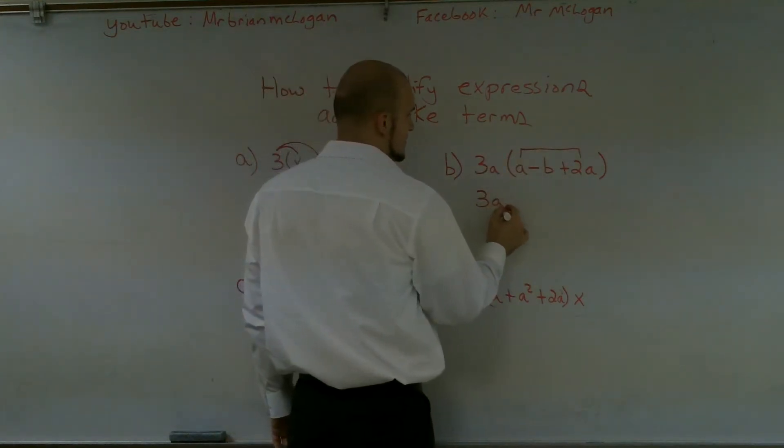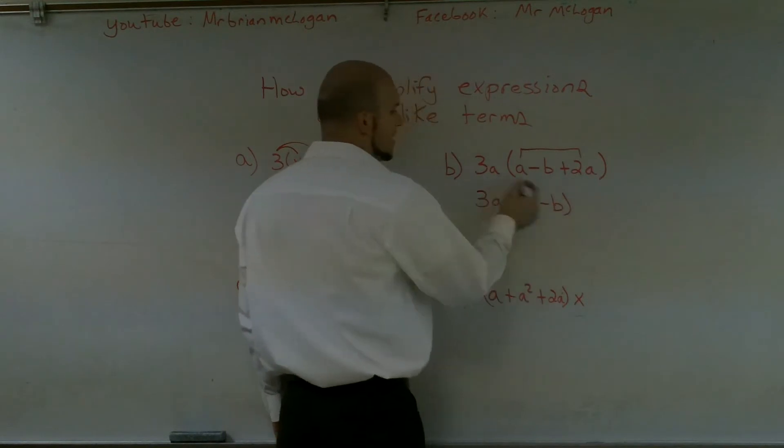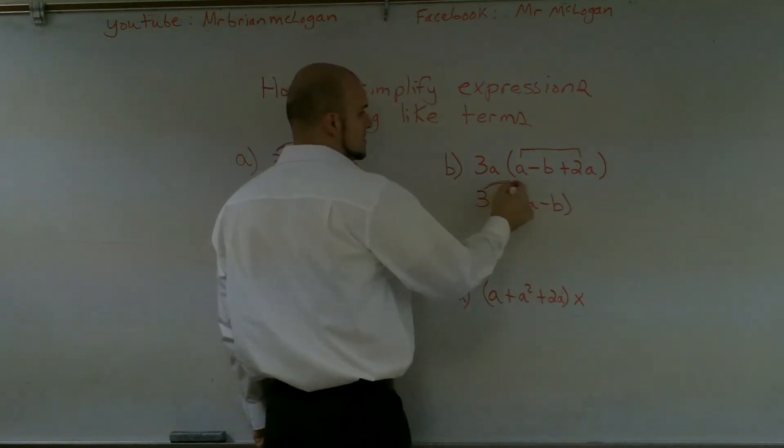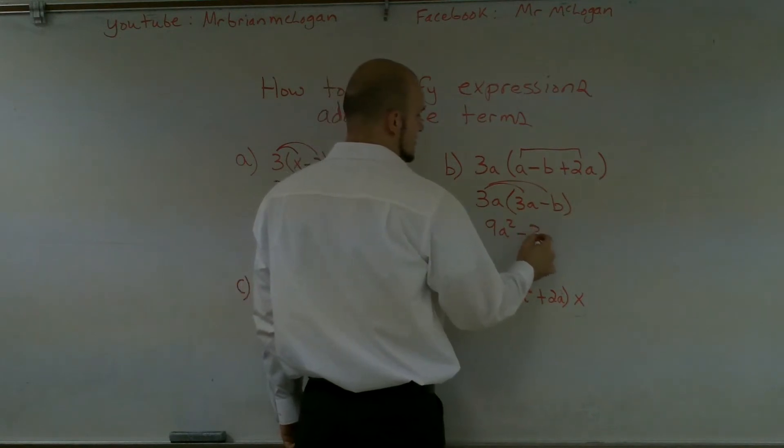So I'm going to get a 3a, sorry, 3a times, this would be 3a minus b. Now when I combine my, now when I use my distributive property, I get 9a squared minus 3ab.